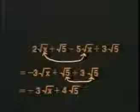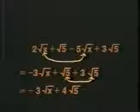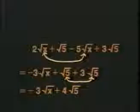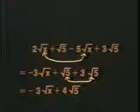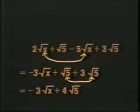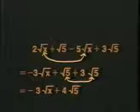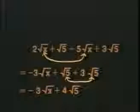I look for like terms, find them, and combine them. The two square root of x terms go together, and the two square root of five terms go together, to give me my final answer. That's as far as I can go, and it certainly wasn't difficult.